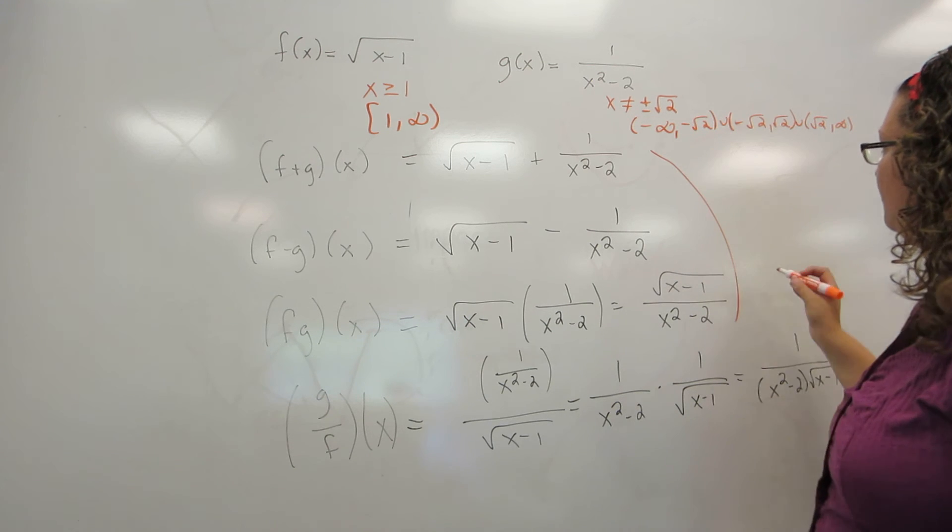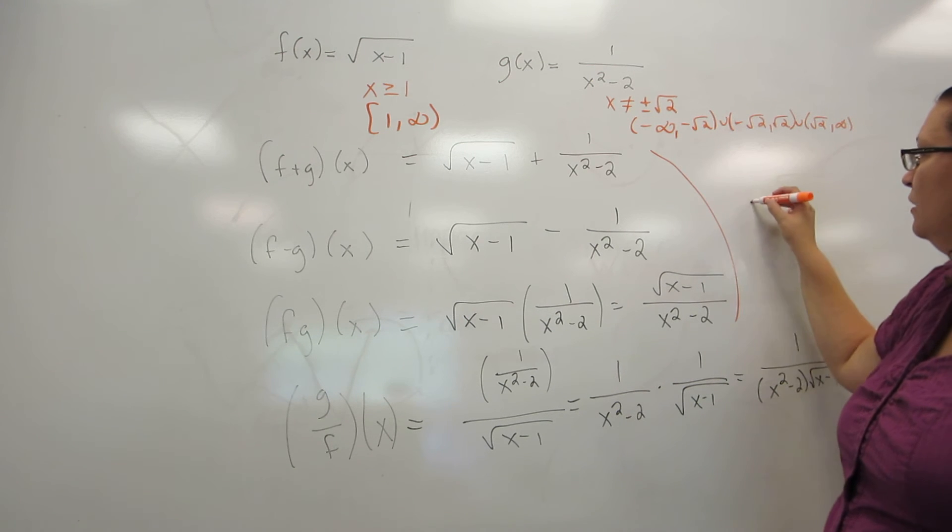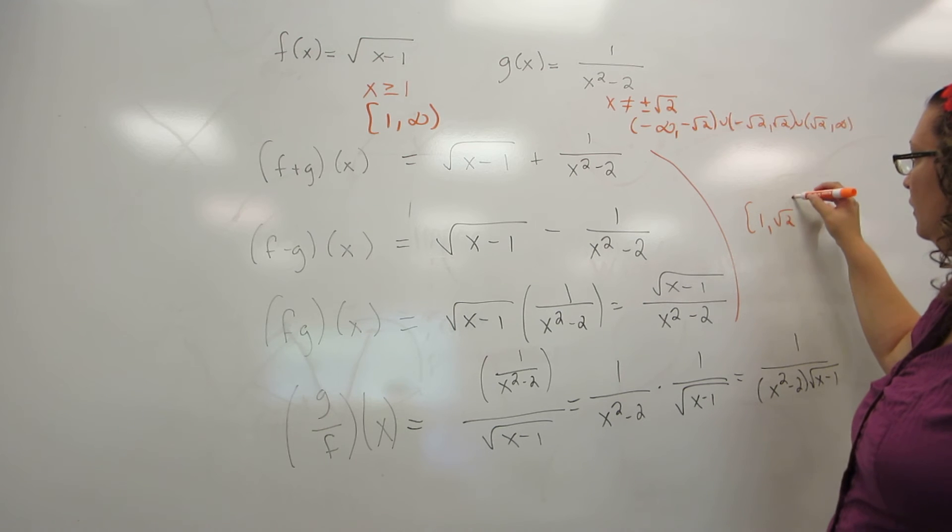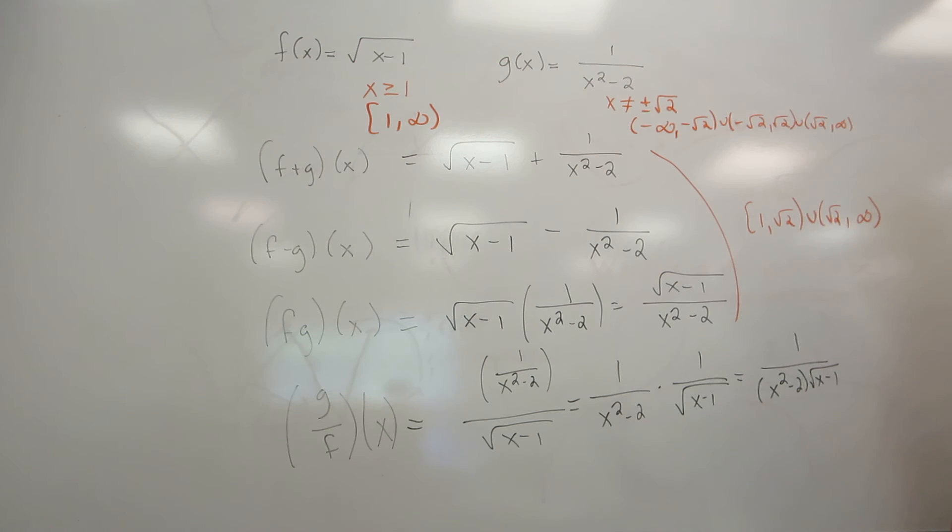So for all three of these functions, the domain starts at 1, excludes the square root of 2, and then goes on for forever.